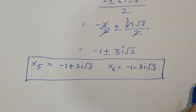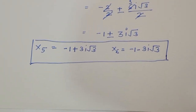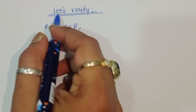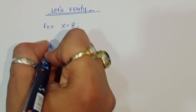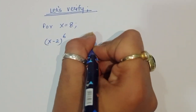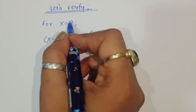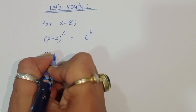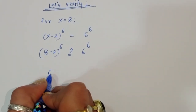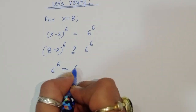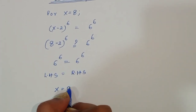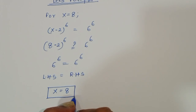Let's verify for x₄ equals 8. The question is (x minus 2)^6 equals 6^6. Substituting x equals 8: (8 minus 2)^6 equals 6^6. Since 8 minus 2 is 6, we get 6^6 equals 6^6. LHS equals RHS, so x equals 8 is confirmed correct. Thank you.